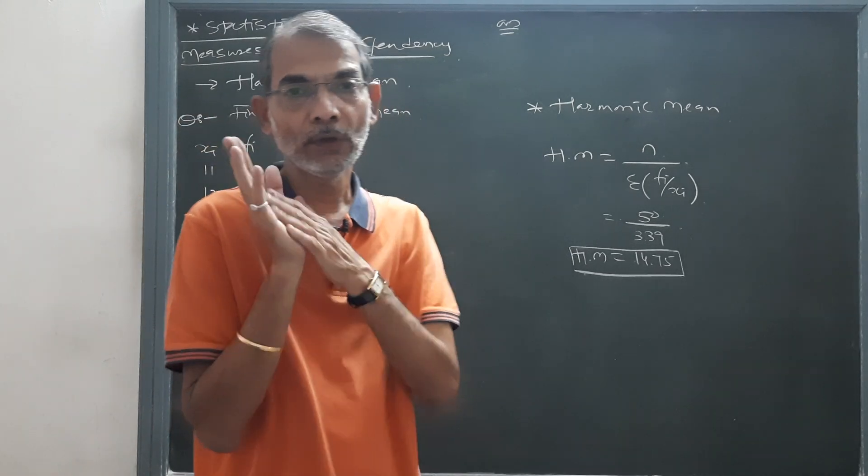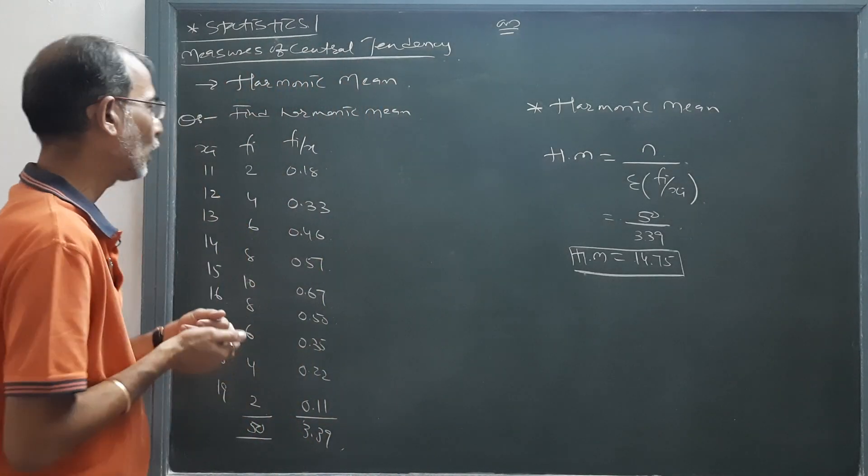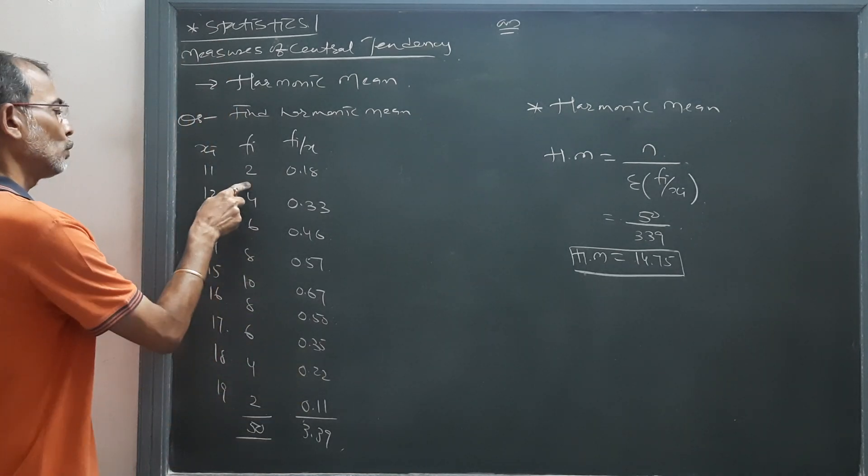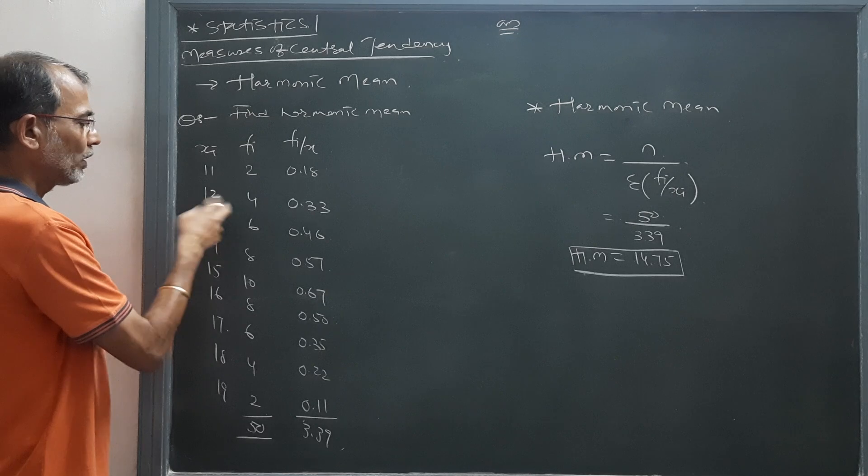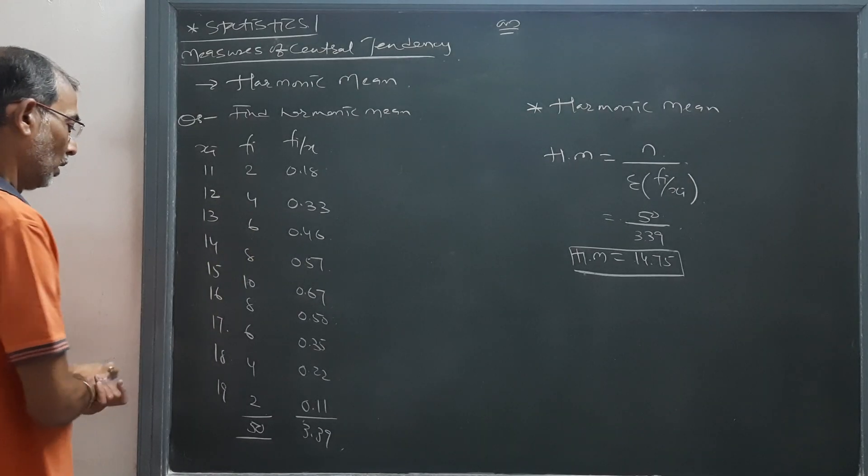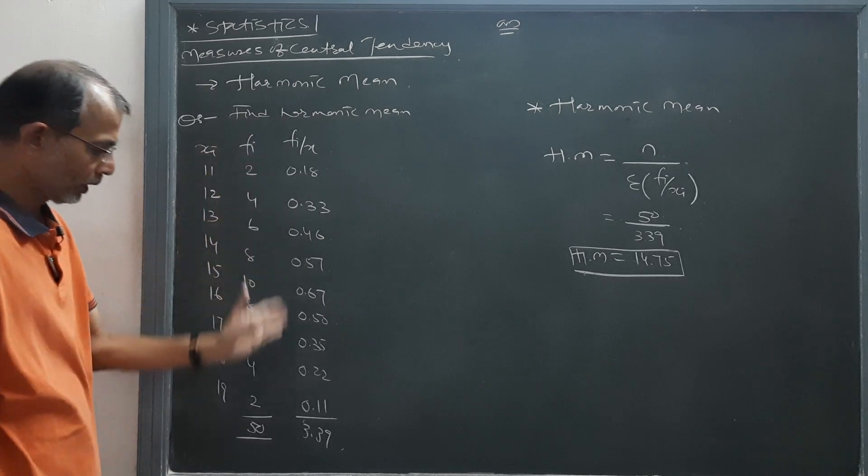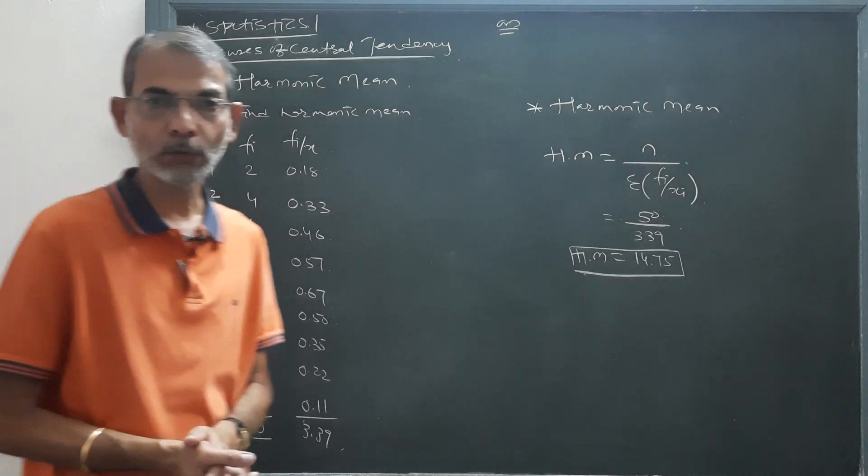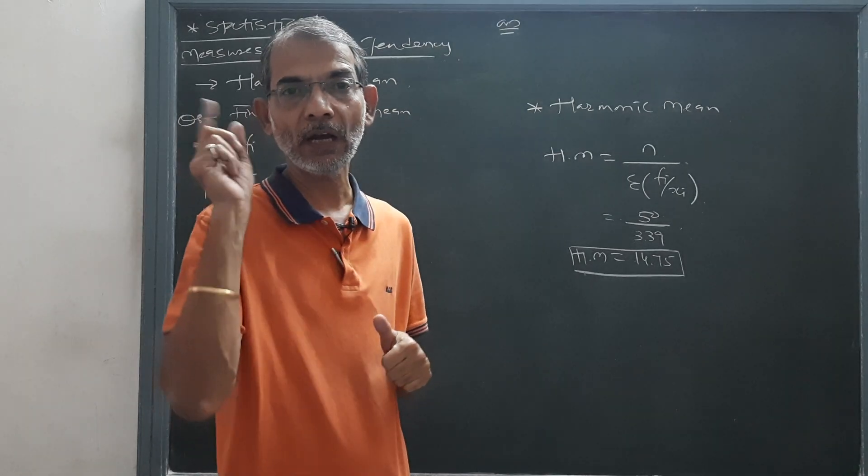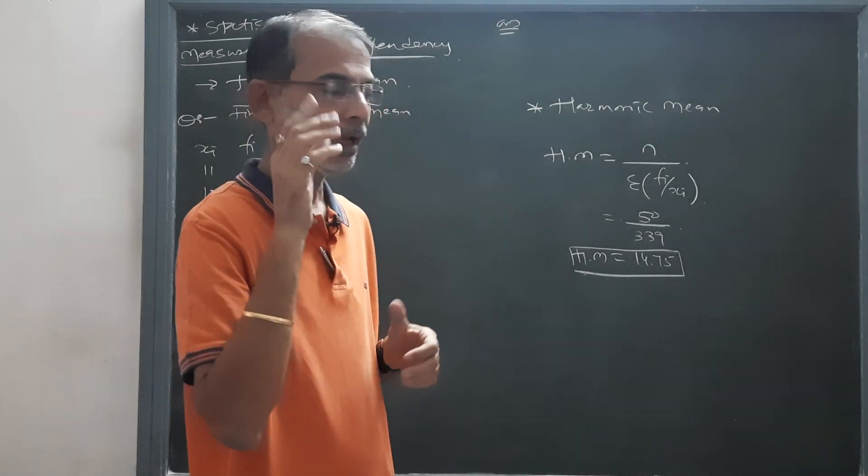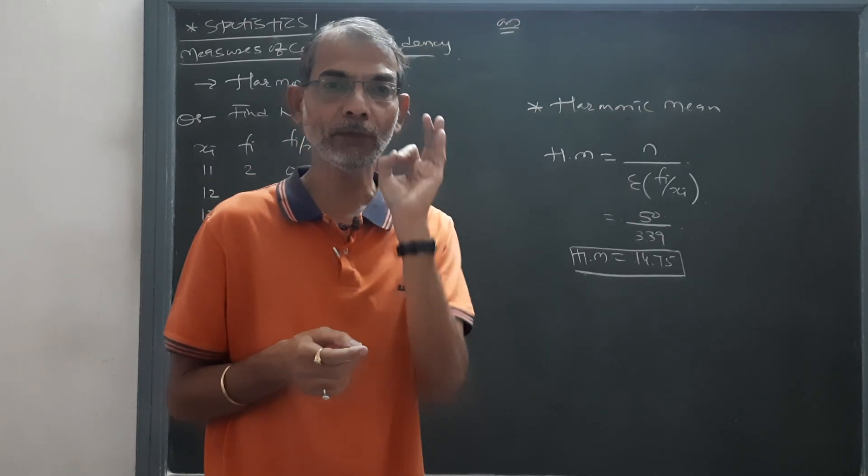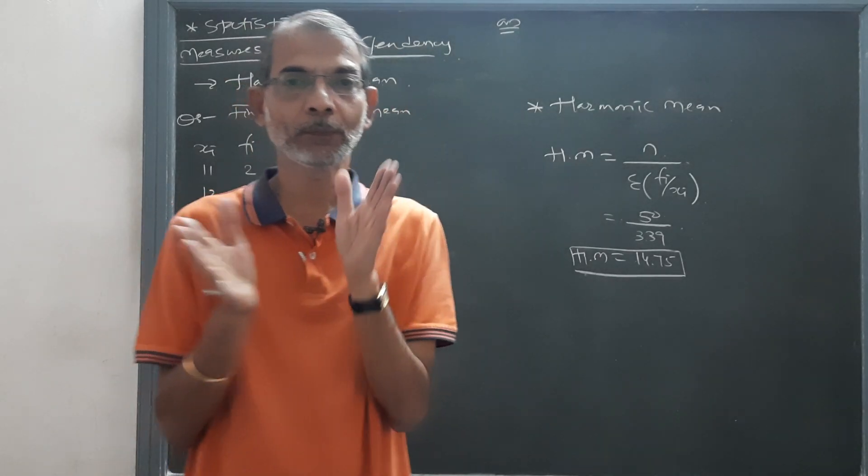What has to be done? First of all you have to find the column of fi/xi: 2/11, 4/12, 6/13, 8/14, 10/15. In this way you complete this calculation, then you place both values n / Σ(fi/xi) and you will get the value of harmonic mean.